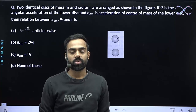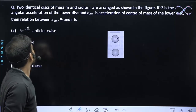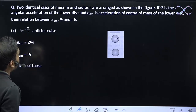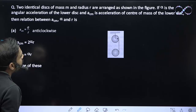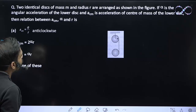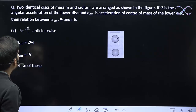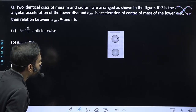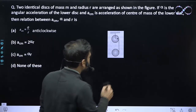Hello students, let us see this question here. Two identical disks of mass m and radius r are arranged as shown in the figure. If alpha is the angular acceleration of the lower disk and a_CM is the acceleration of the center of mass of the lower disk, then the relation between these three are asking. So, let us solve this question.